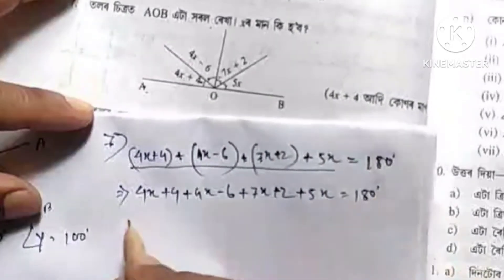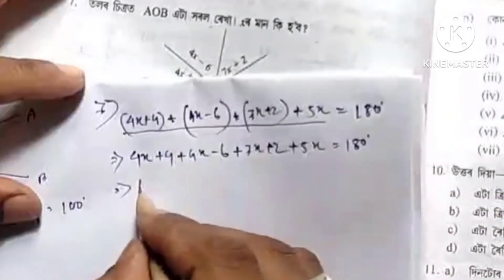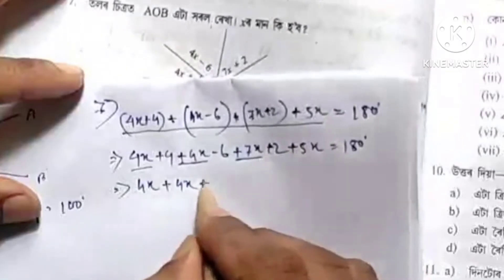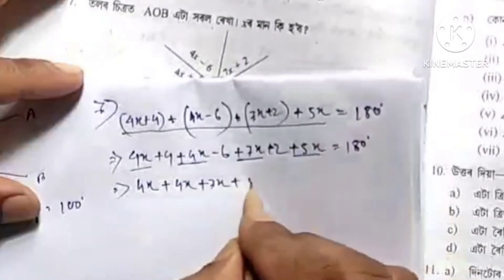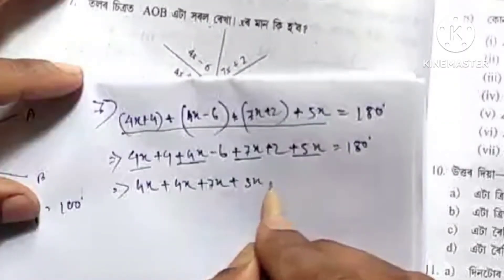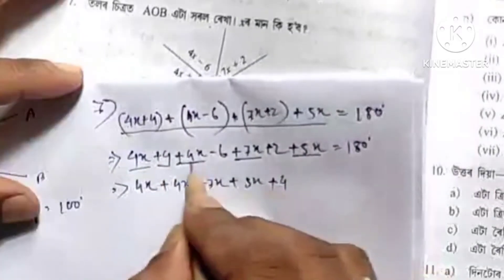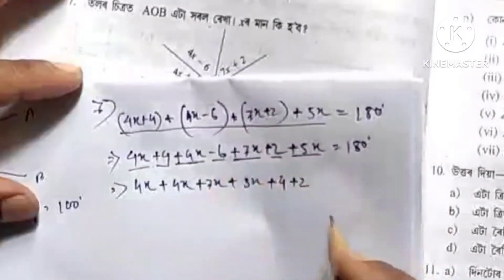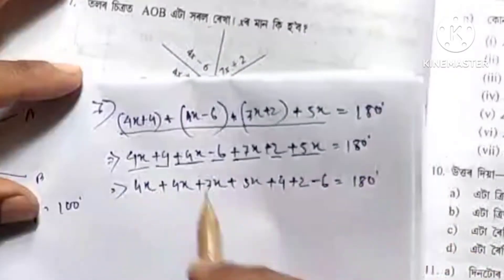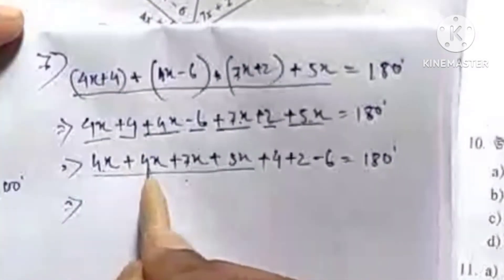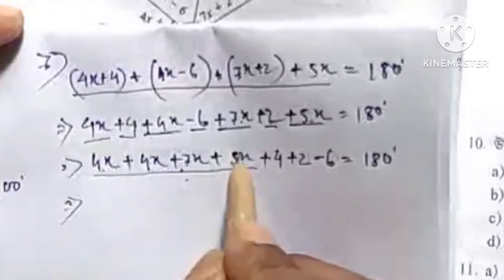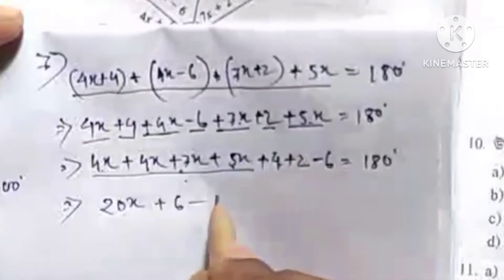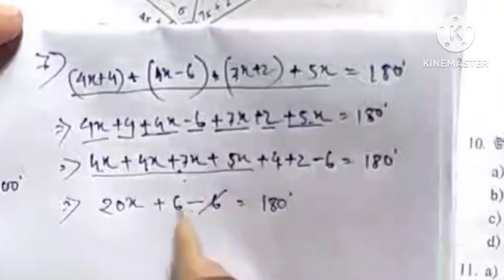This is the color of 4x plus 4x plus 7x plus 7x plus 5x. This is 4x minus 6 plus 5x plus 4x plus 2 plus 6. So: 4, 8, 15, 25, 20x. And 4, 2, 0, 100 and minus 100. Minus 100 and plus 100.